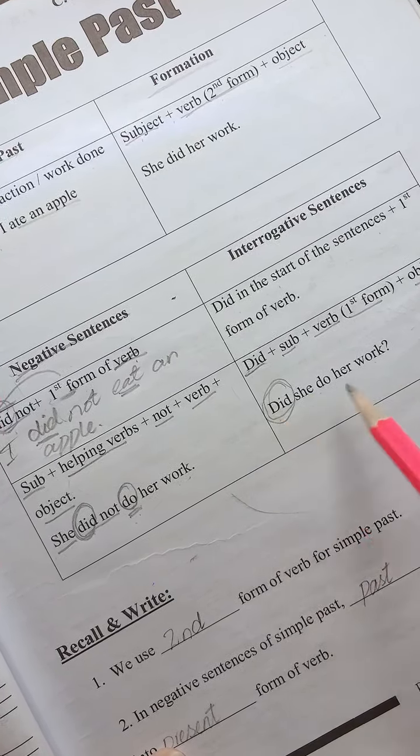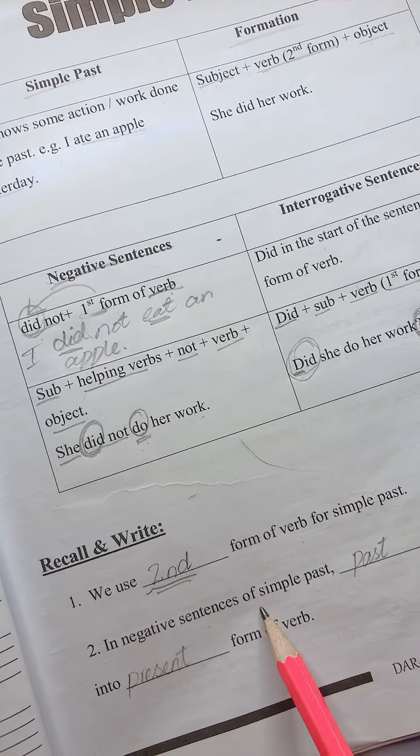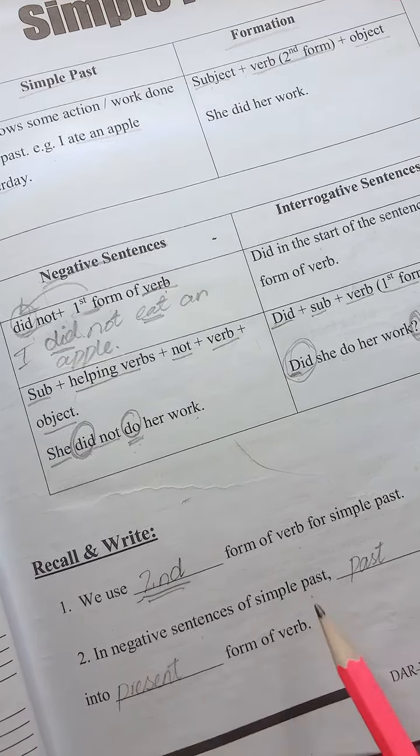We use second form of verb for simple past tense. In negative sentences of simple past, which are negative sentences, past form changes. Past form changes into present form of verb.